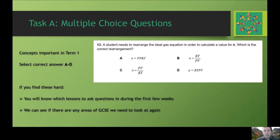Task A is some multiple-choice questions based on concepts that are going to be important in term one. You'll have to select the correct answer — A, B, C, or D. If you find them hard, don't worry. It means you'll know which lessons to ask questions in during the first few weeks, and we'll know if there are any areas of GCSE we need to go over again.